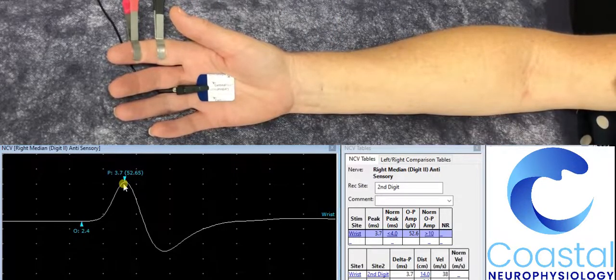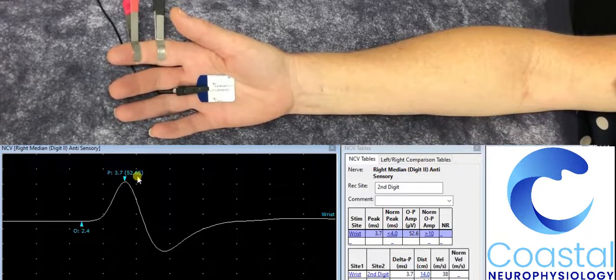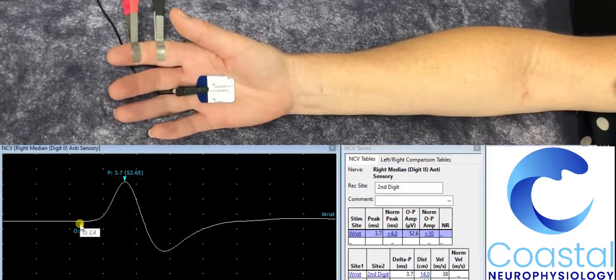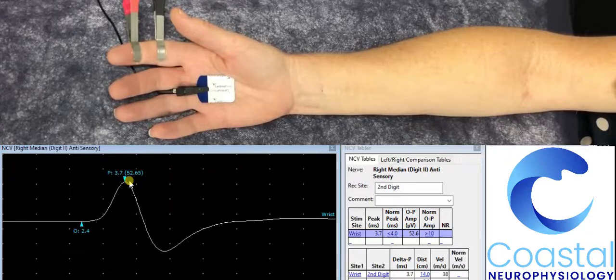There is a second number here in brackets, 52.65. This is the size of the signal. It is measured from the onset of the waveform to the peak. This tells me how large the signal is.